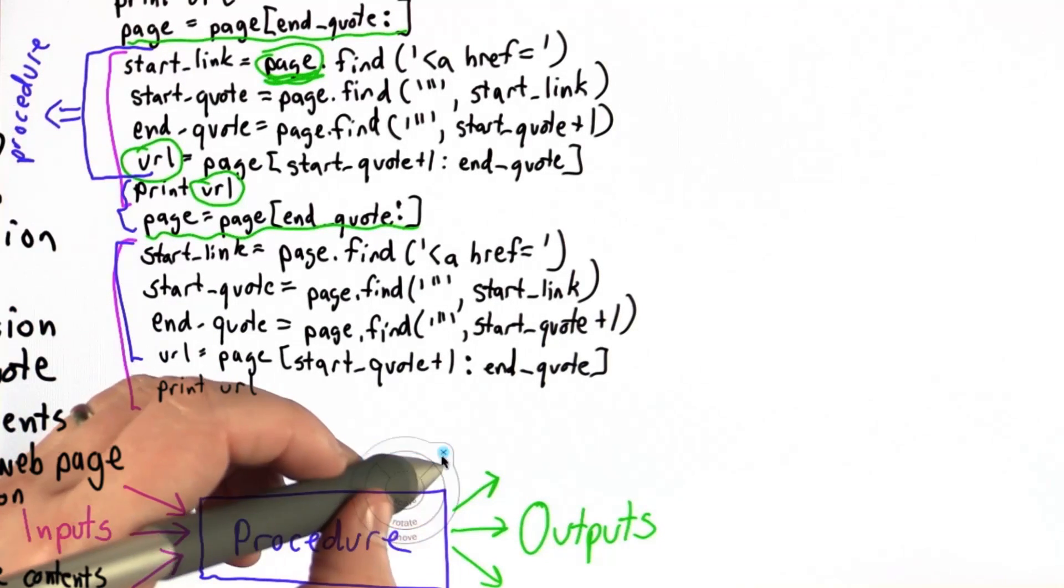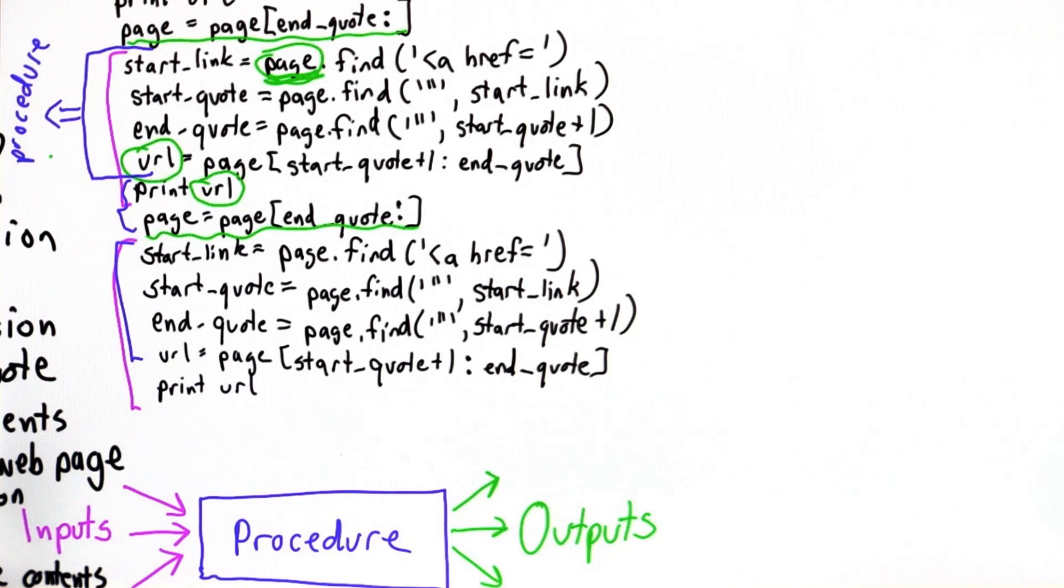Again, we're looking at the same segment of code that we're trying to replace with a procedure. What do we think the output should be? This is going to be trickier.